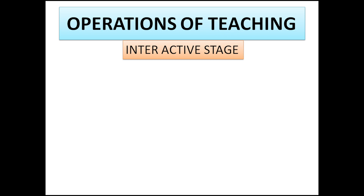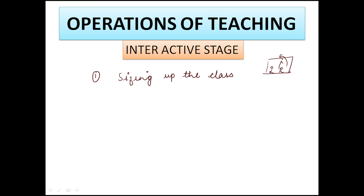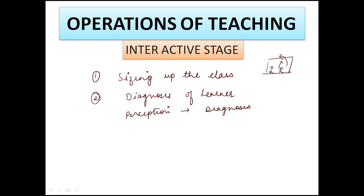Next is the interactive stage. When the teacher enters the class, the first task is sizing up the class — students sit as they like, but since we are teachers, we know who should sit in front, who at the back, and we should check that talented students aren't all on one side and backward students are not all at the back. The teacher must size up the class so all students receive knowledge equally. Second is diagnosis of learner — where a process of perception, diagnosis, and then response is followed.